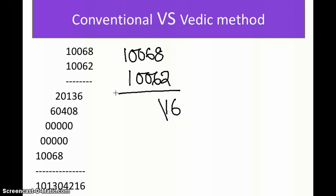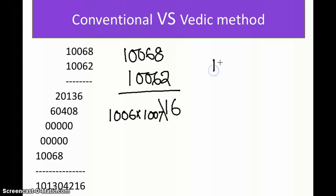On the left side, we multiply the remaining number 1006 by the next consecutive number, 1007. To find 1006 × 1007, we can apply our Vedic formula again. The base here is 1000: 1006 is 6 more than 1000, and 1007 is 7 more than 1000.